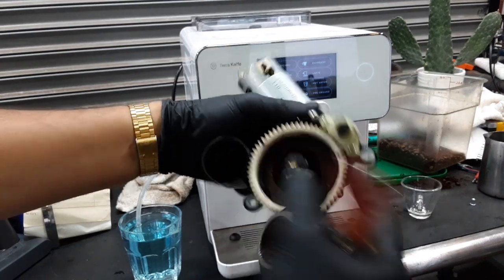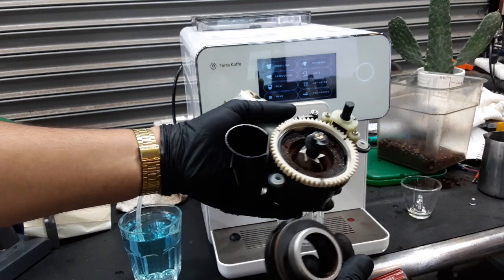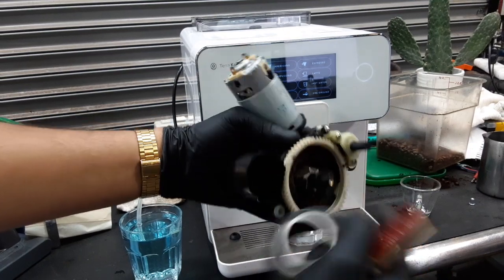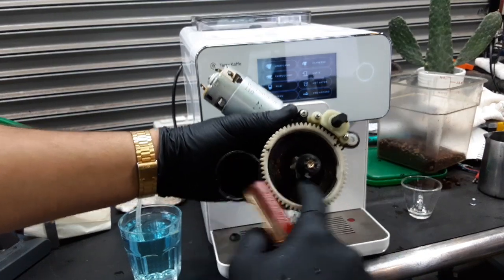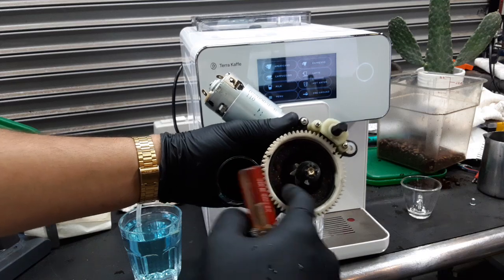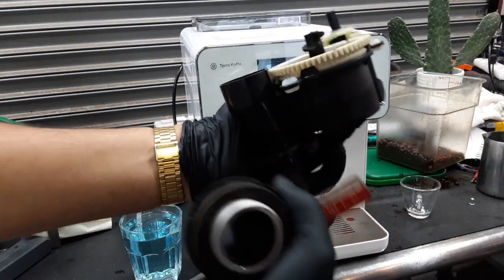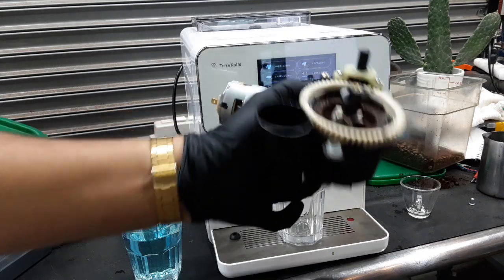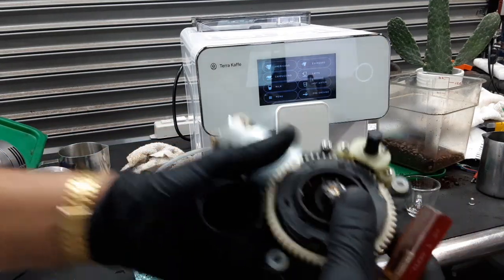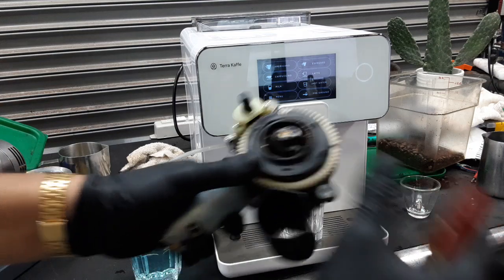That thick wall literally prevented anything from passing through into the chamber where coffee grounds fall into the brew unit to make espresso. So we had to replace the grinder.